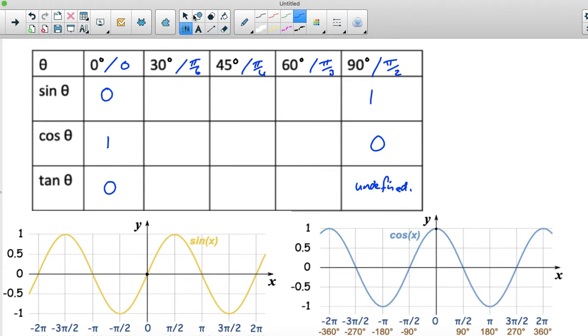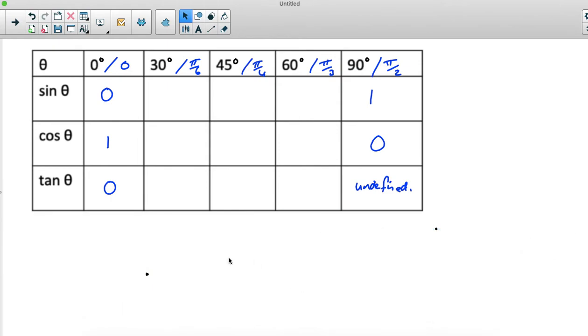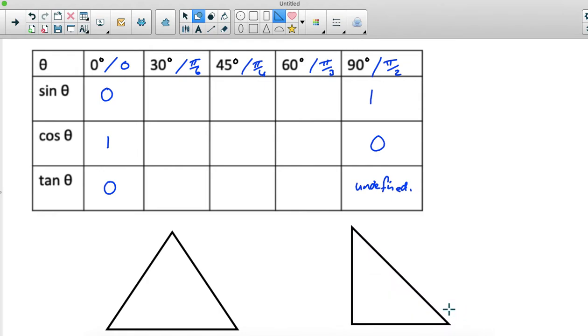Now, what about the 30 degrees, the 45 degrees, and the 60 degrees? We can get all of those by drawing two special triangles. I recommend that you learn this from this table. However, if worse comes to worst and you're in an exam and you can't remember what they are, it's worth knowing these triangles, how to start these triangles, because you can get these trig ratios very easily from these triangles.